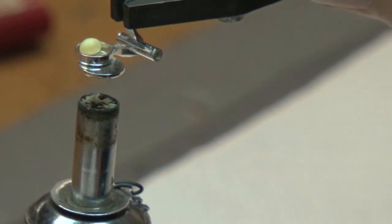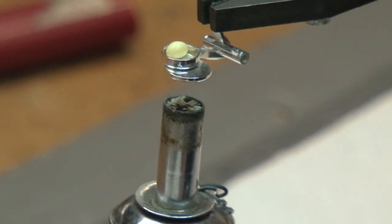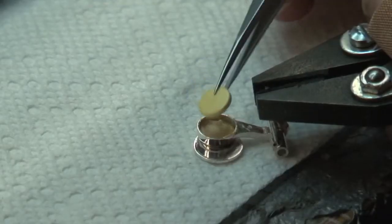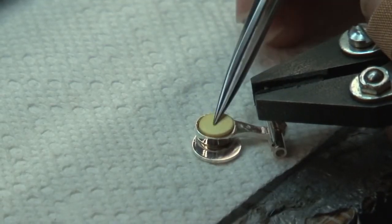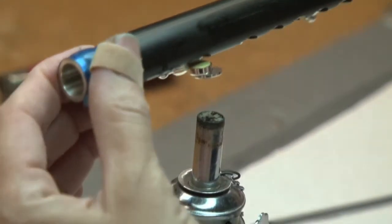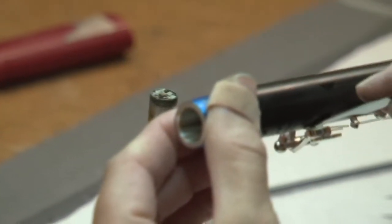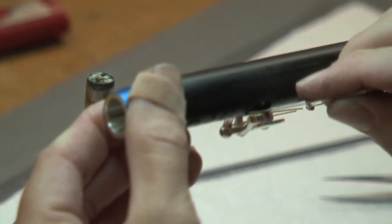To hold the piccolo pads in place, I use a hot melt glue. I insert the piccolo pad, heat the cup over an alcohol lamp, and float the pad into place.